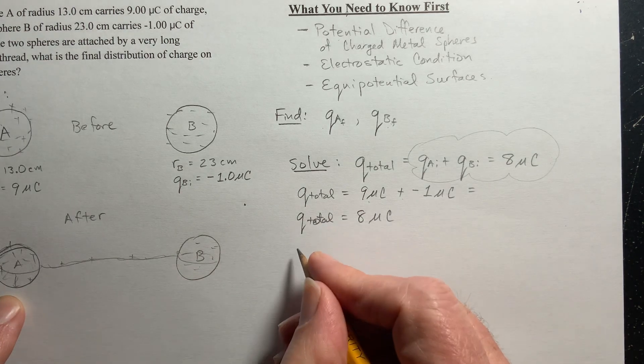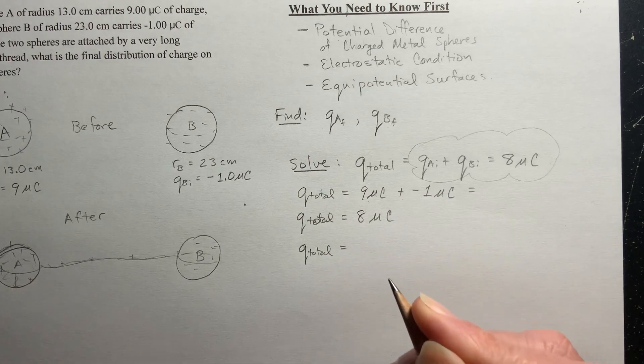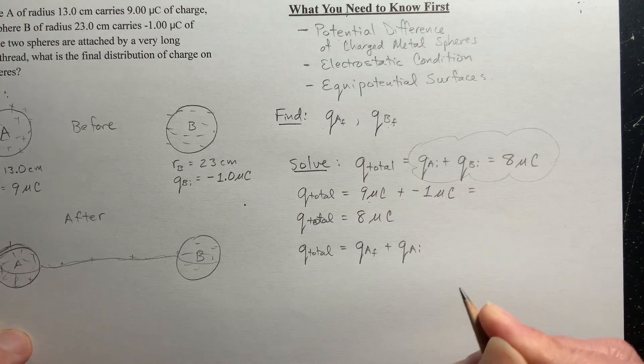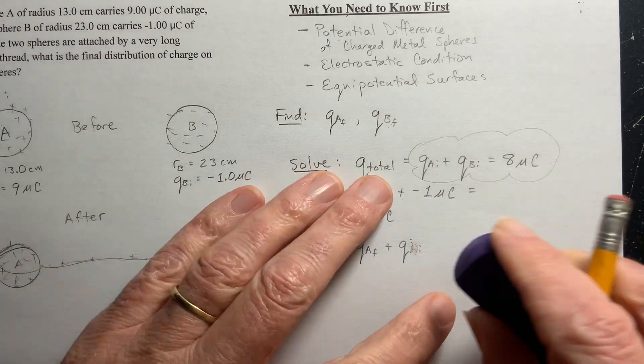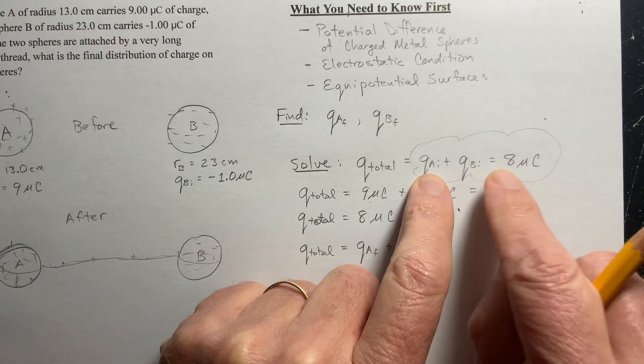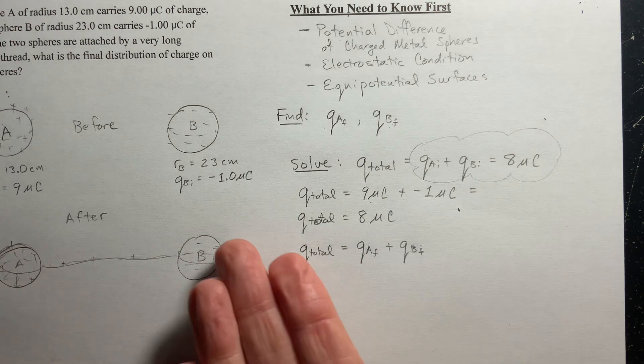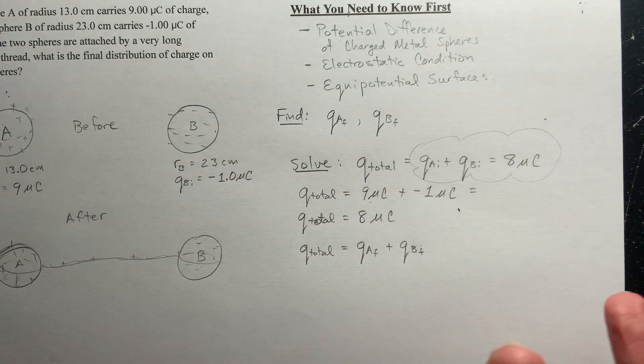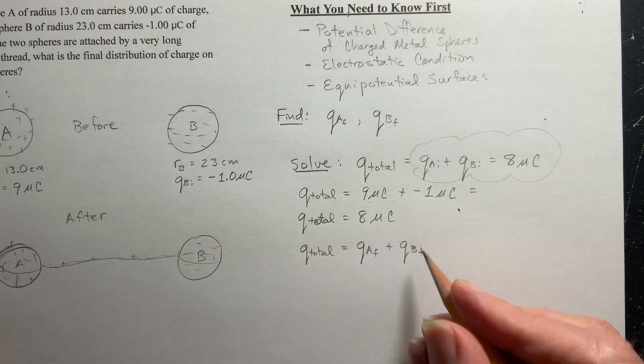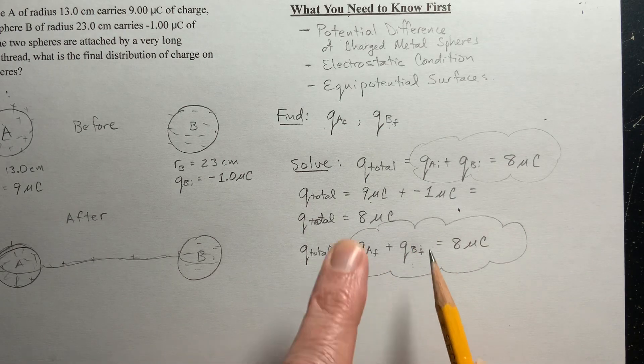But now they're going to be shared this way. So Q total is equal to 8 microcoulombs, but it's also equal to QA final plus QB final. So QA initial plus QB initial is 8 microcoulombs. Well, when you add up the charge, you're still going to have the same amount of charge, you have conservation of charge. This charge can't go anywhere. It's constrained to move through this system. And so if I started with 8 microcoulombs of net charge, I'm going to end with 8 microcoulombs of net charge. And I know that this is 8 microcoulombs.